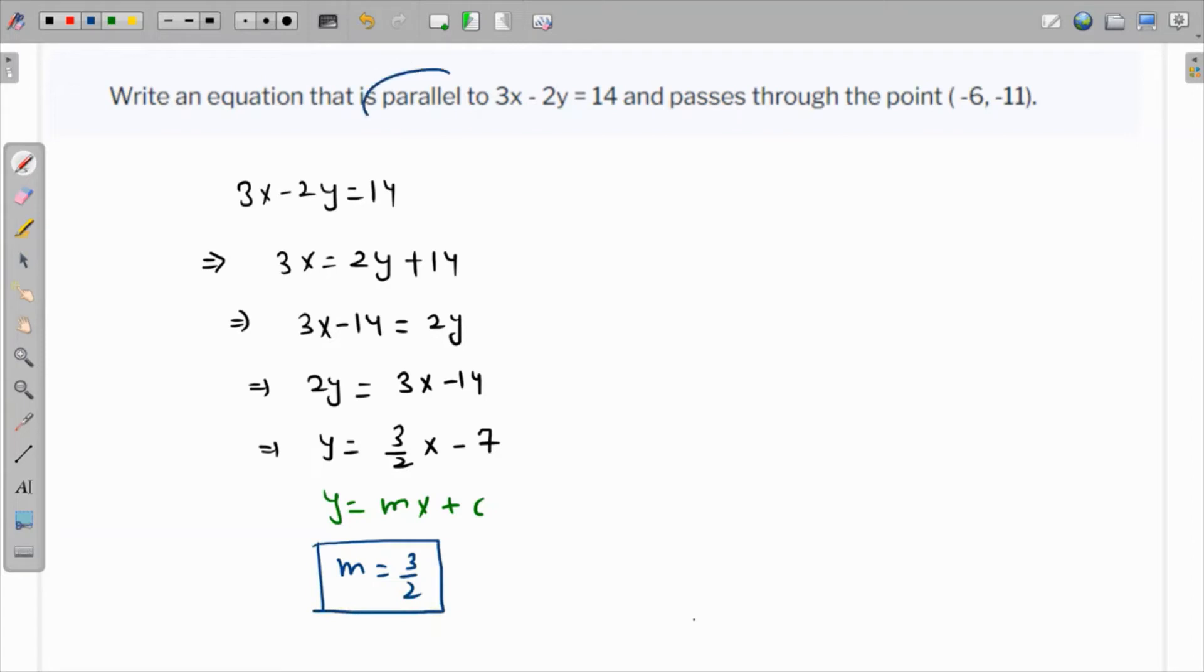So why have we found the slope? Because the slope of parallel lines is the same. So now we have to find the equation of a line for which the slope is given as 3 over 2 and it passes through the point negative 6 and negative 11.